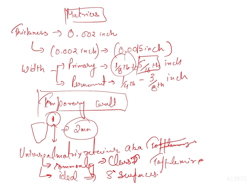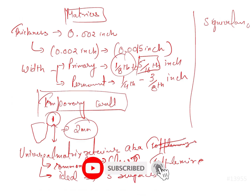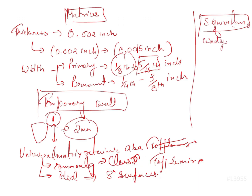Another type of matrix band is known as the Siqveland matrix. This matrix is used where anatomical adaptation is possible without wedges. So with this particular matrix, you do not need wedges to create the anatomical contour.